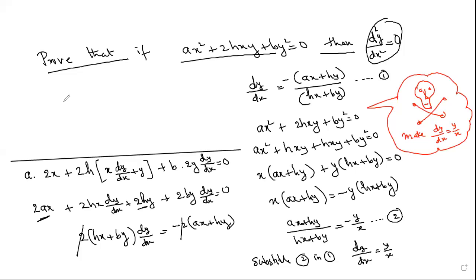Now the second part - dy/dx is y/x. Now differentiate again with respect to x. Don't cross multiply, directly differentiate. So d²y/dx² is d/dx of y/x.